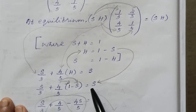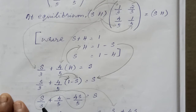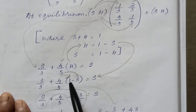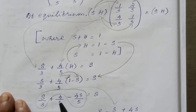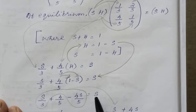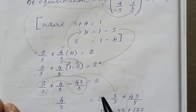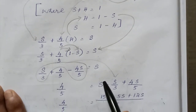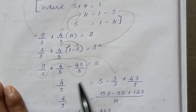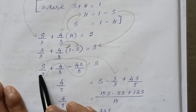Now we expand: S by 3 plus 4 by 5 into 1, in the bracket 4 by 5, plus minus 4 times S gives 4S by 5, equal to S. Now we have 4 by 5 equal to S.